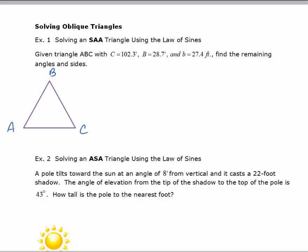I'm going to label the three angles A, B, and C. Then I'm going to fill in the values that I know are true. I have angle C equals 102.3 degrees, angle B is 28.7 degrees, and side b, which is the side opposite angle B, is 27.4.